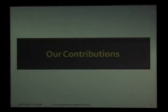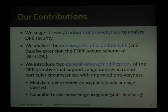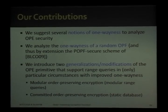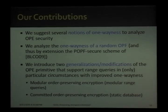This brings us to our current contributions. Our main result is to address the open question of analyzing the security guarantees of a random order-preserving function. We suggest several notions of one-wayness to analyze OPE security, analyze the one-wayness of a random order-preserving function using those notions, and by extension these results apply to the POPF secure scheme of our old paper. We also have a couple of tangential results discussing two variations of the OPE primitive that support range queries in particular circumstances but with improved one-wayness.